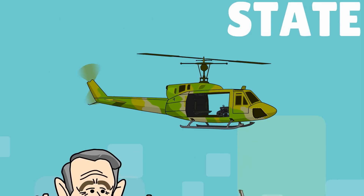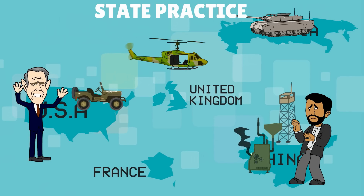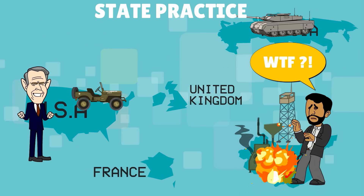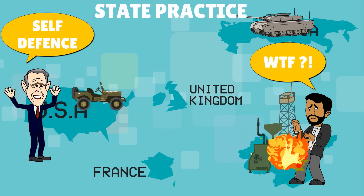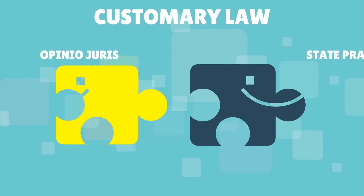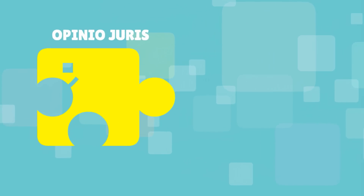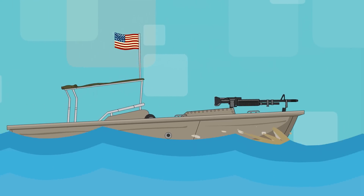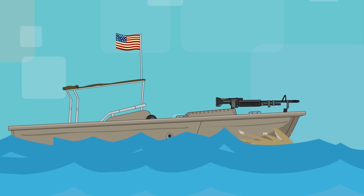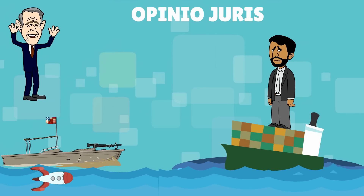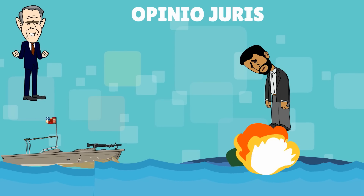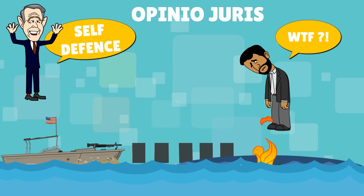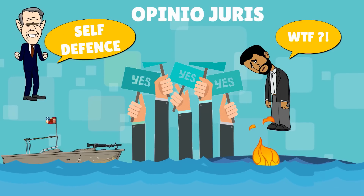State practice is the material part of customary law and combines states' behavior and actions — in other words, what states do and say. Opinio juris is the second part of customary law, and it means that the states' verbal or material acts have to be accepted as binding law by the rest of the international community.